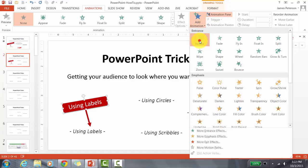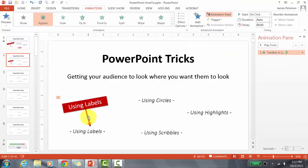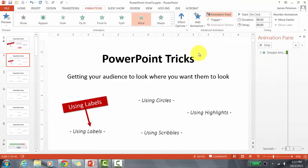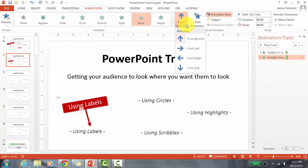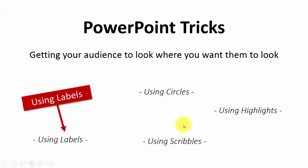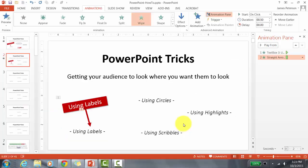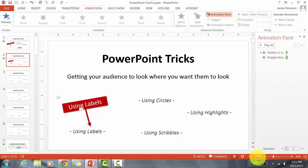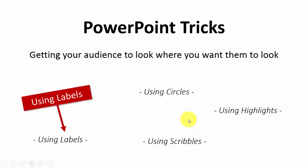The animation I like to use for the label box is Appear, because it's very fast. For the arrow, the animation I like is Wipe. Click Add Animation, then Wipe, but I want it to go from the top down in the direction from the label. Now you'll see: the box appears and then the arrow comes down. To make it one click, select the second animation in the Animation Pane and change Start to After Previous. That's how you make labels.